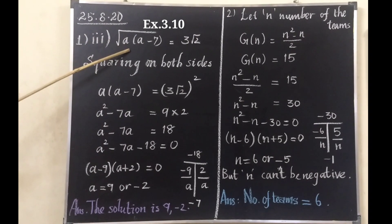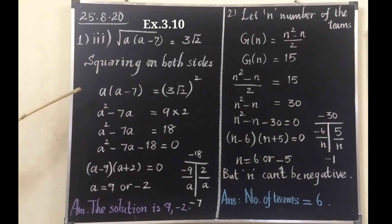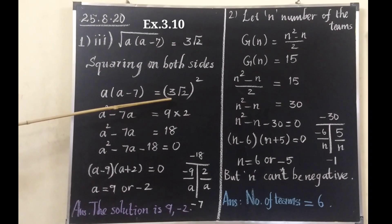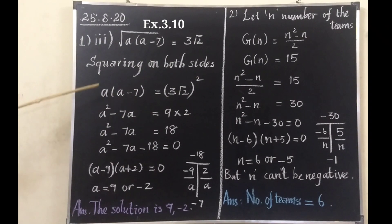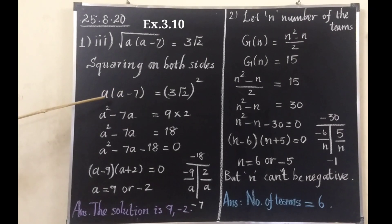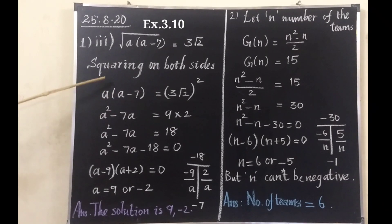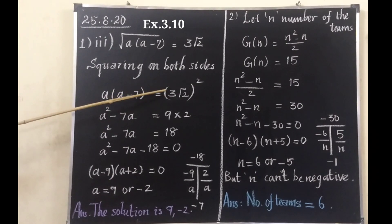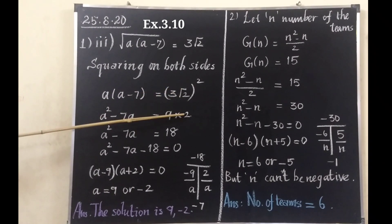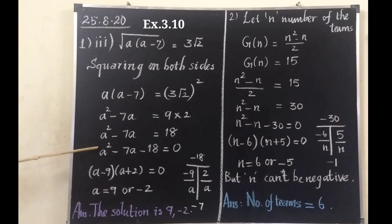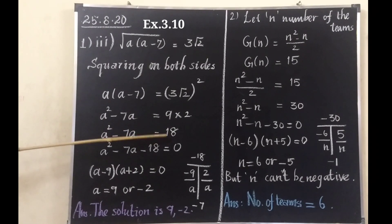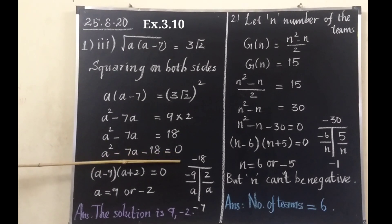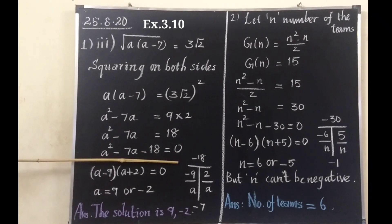When squaring on both sides, the root will be removed. It becomes a(a minus 7): a into a is a square, a into minus 7 is minus 7a. The right side: 3 root 2 squared — 3 squared is 9, root 2 squared is 2, so 9 into 2 is 18. So it becomes a squared minus 7a equals 18, then a squared minus 7a minus 18 equals 0, which is a proper quadratic equation.